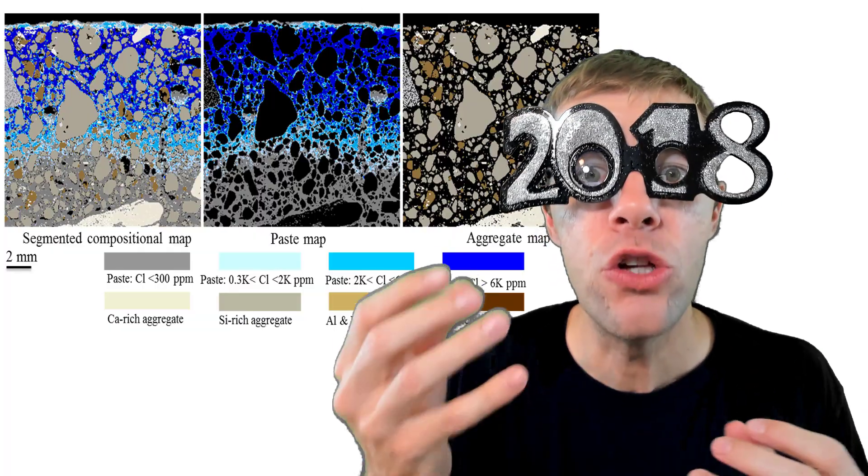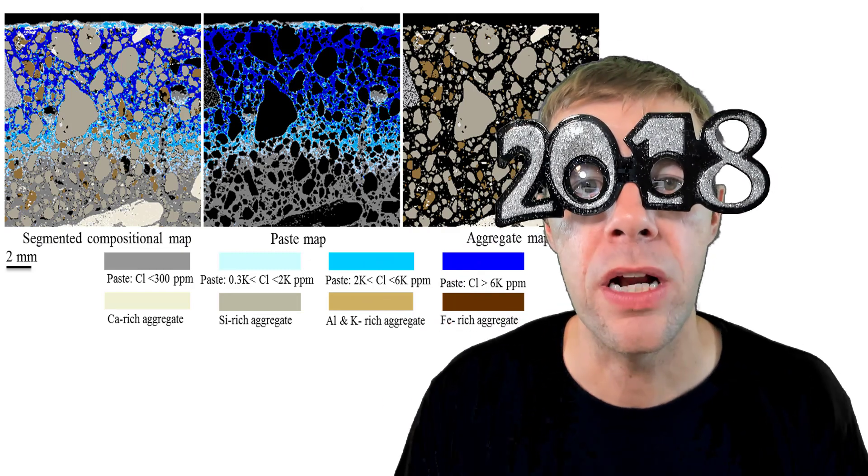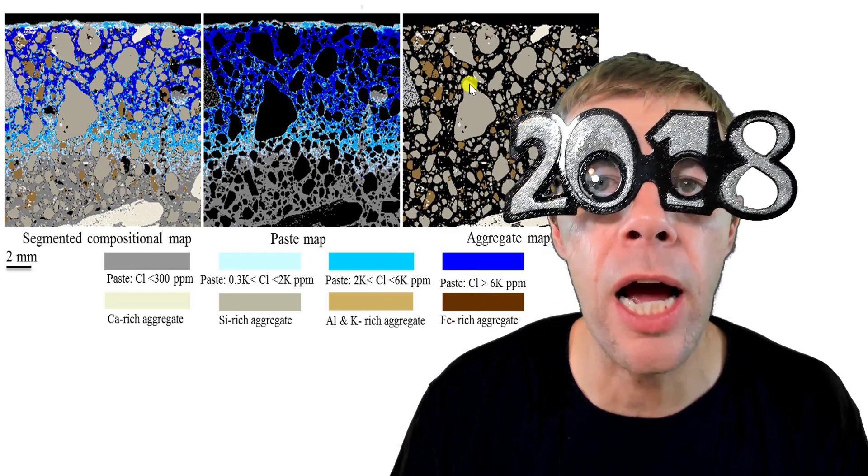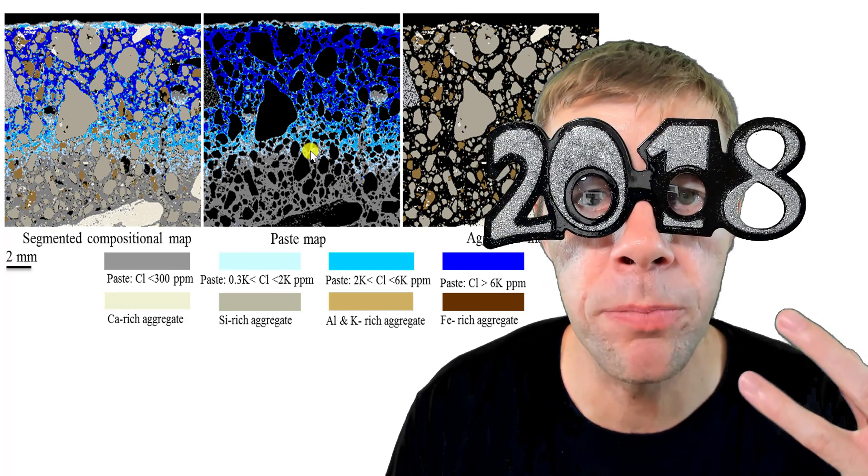And what it allows you to do is go from seeing light to seeing chemistry by wearing chemical glasses. When you do this, you can see the chemistry on the surface of the concrete. On the right, I can see all the different types of aggregates that are in the concrete.